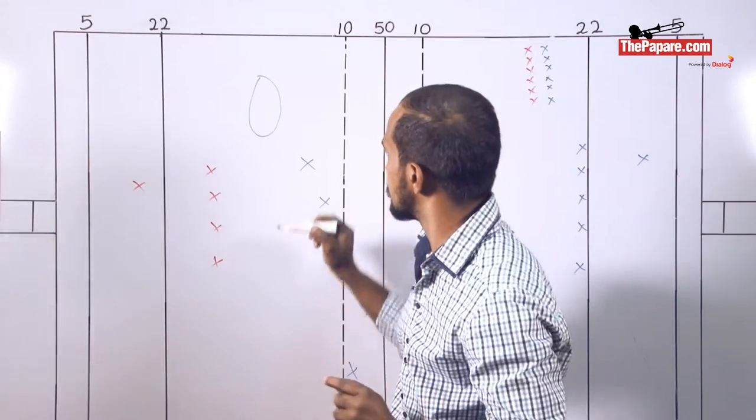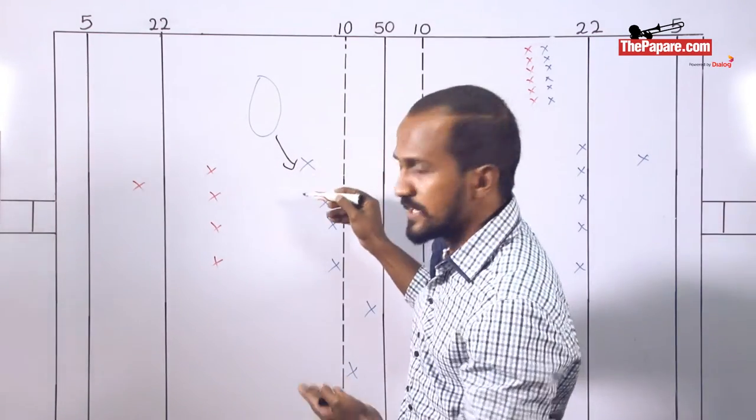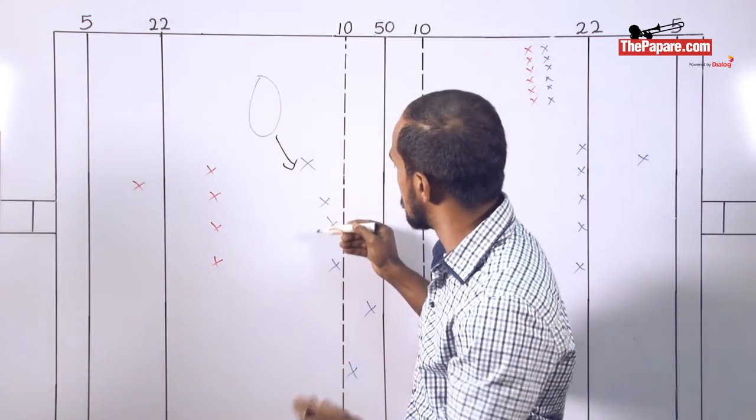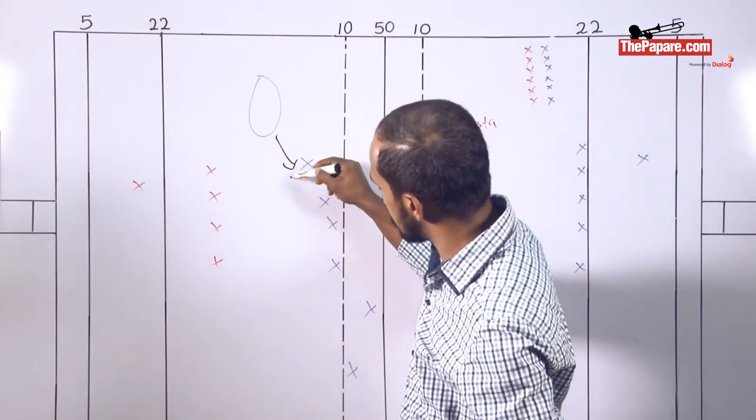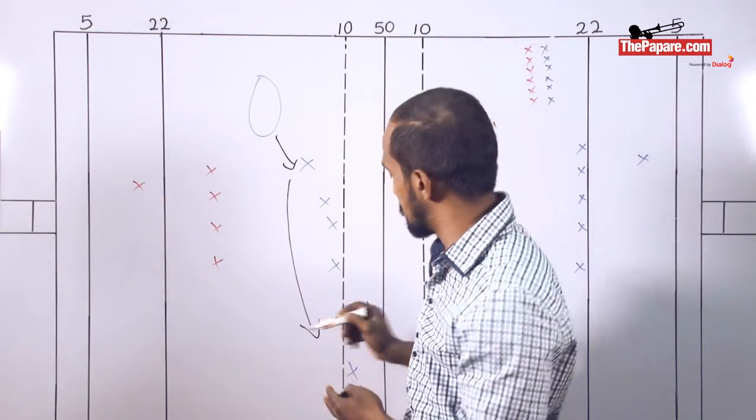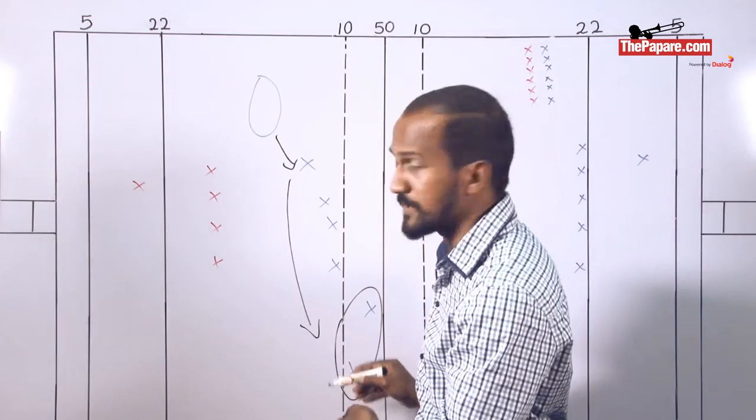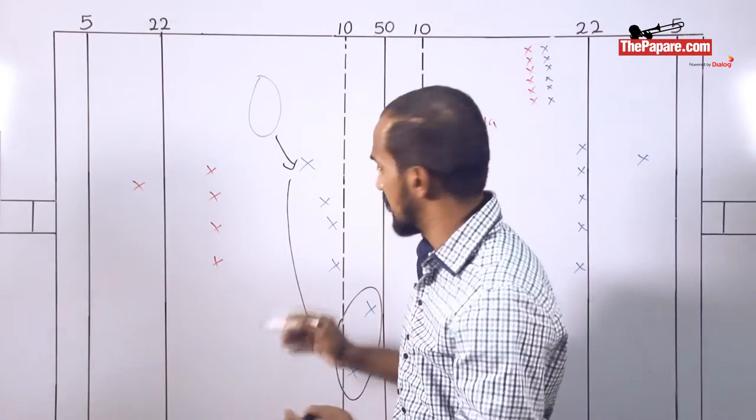Now the mistake by Navy is every time from a breakdown when they get a ball, they are not using the short players or the supportive players into their left or into their right. Instead, the ball all the time goes into a long ball. This is not 7s game. They are expecting these two to score the maximum, but instead...